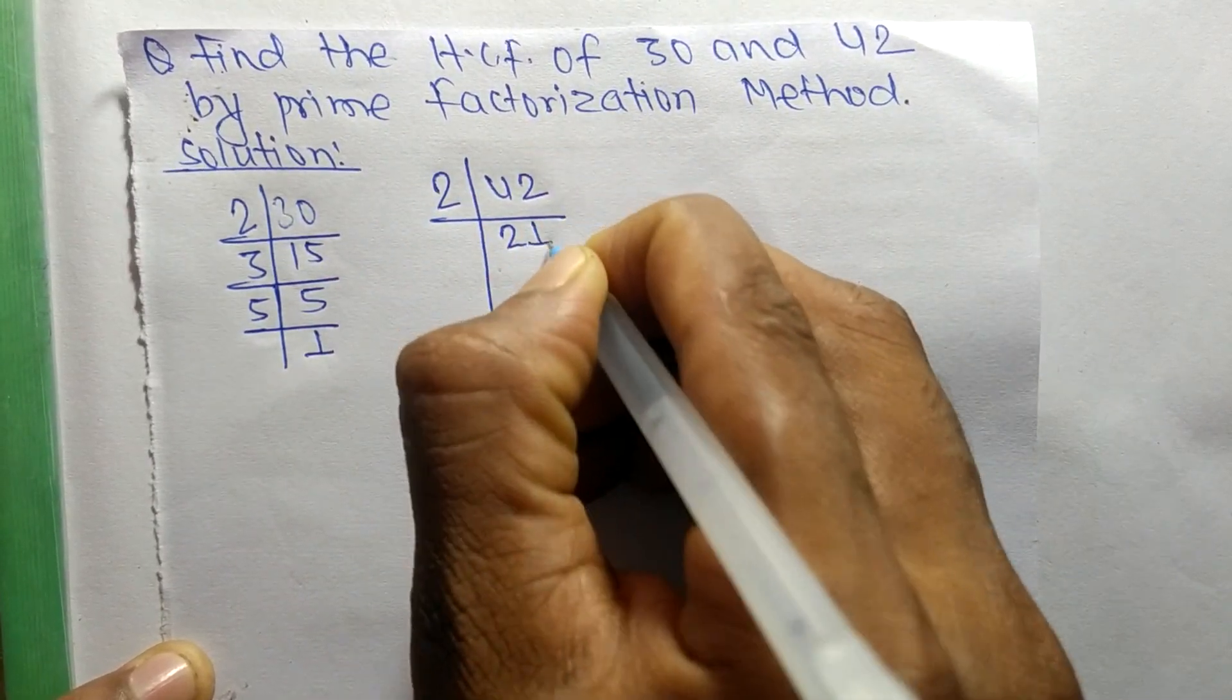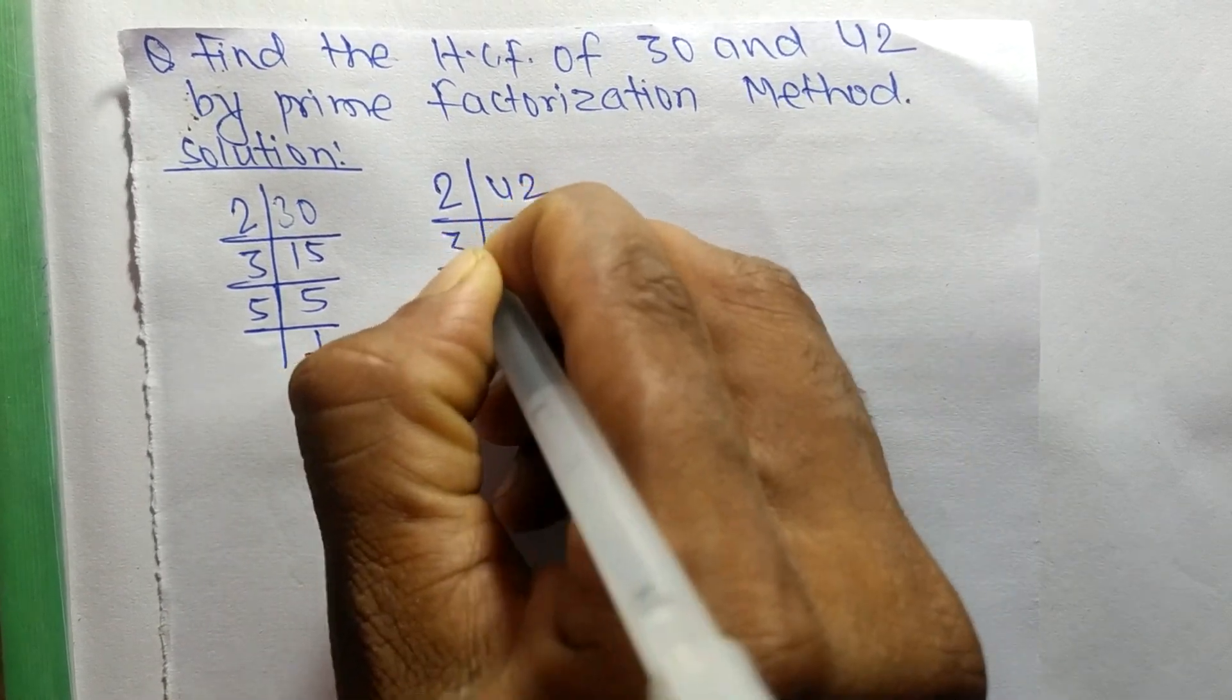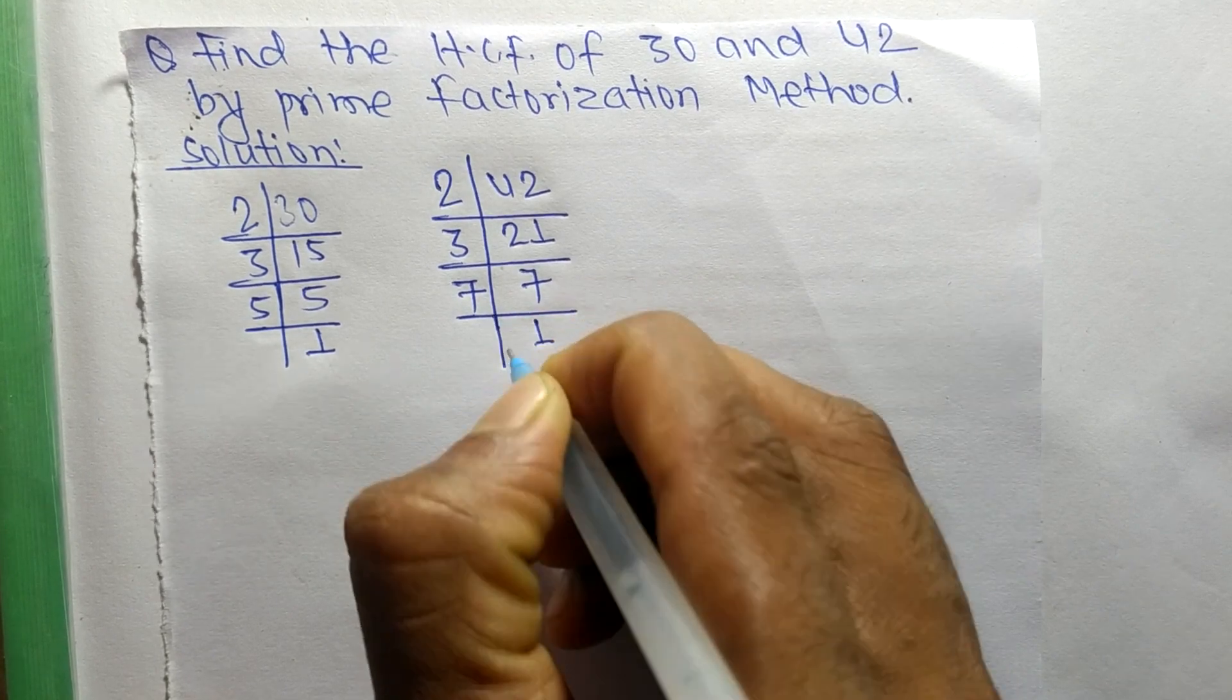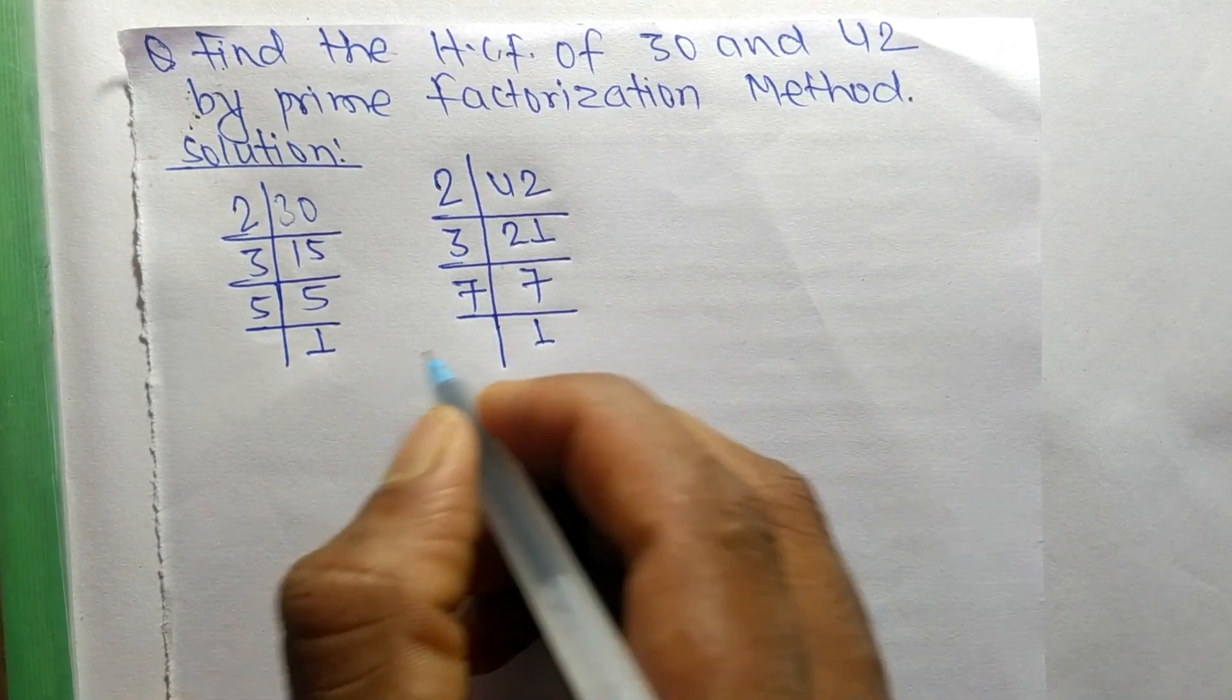2 times 21 means 42, 3 times 7 means 21, and 7 times 1 means 7. So from these prime factors...